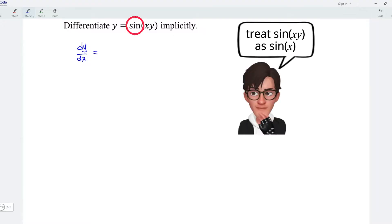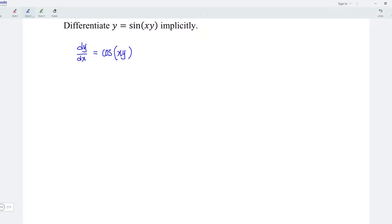When we differentiate sine, we should obtain cos. For the angle, remain xy. And now, we should differentiate the product of xy by using the product rule.